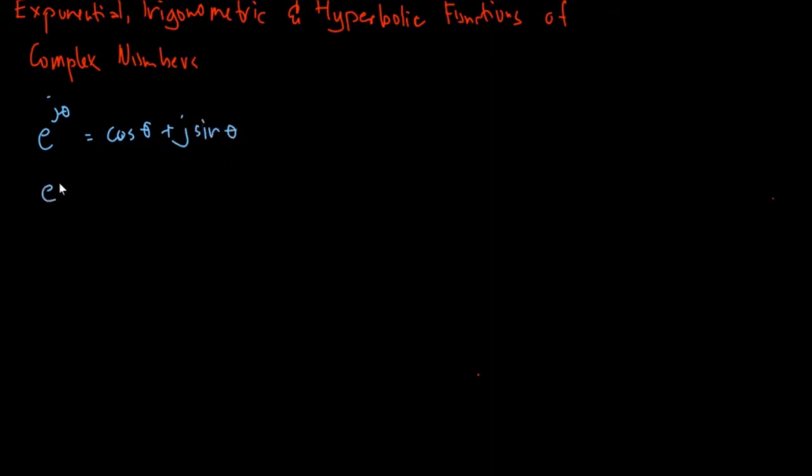So if this will be e to the negative j theta, this will be equal to cosine theta minus j sine theta. We have managed to get these functions in our previous videos. Now, this is the exponential functions.